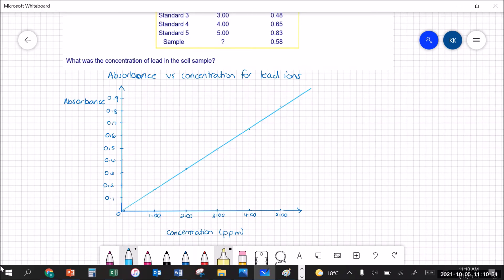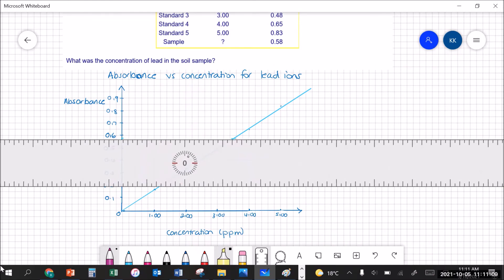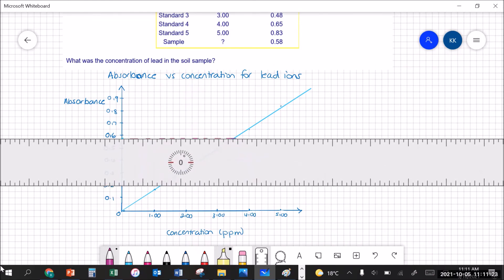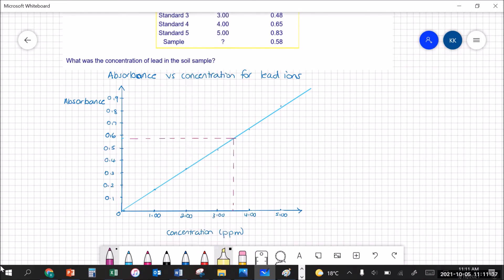Now we know that the absorbance of the sample is 0.58. So here's 0.58. We run across to the graph then down to the concentration axis. We can see here we're looking at around about 3.50 as our concentration. So the concentration of lead in the sample is 3.50 parts per million.